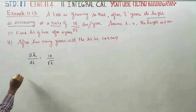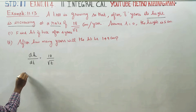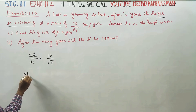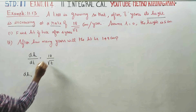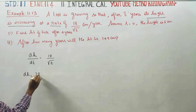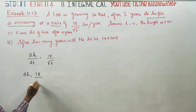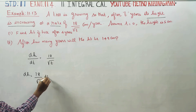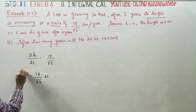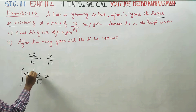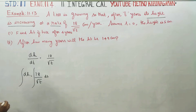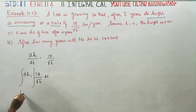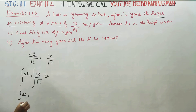If you want to solve this, just cross multiply: dh is equal to 18 by root t dt. Now integrate both sides — integration of dh is equal to integration of 18 by root t dt.